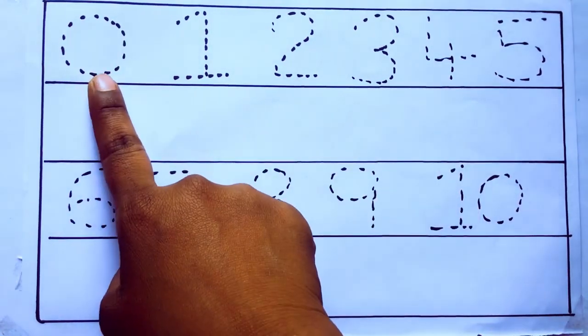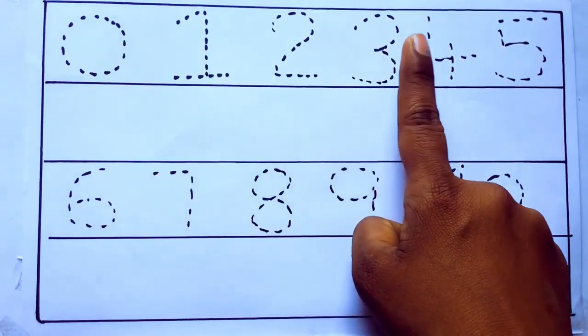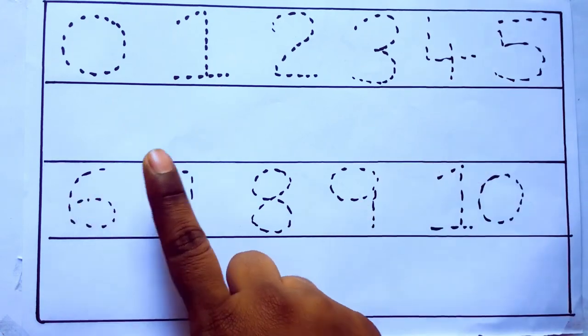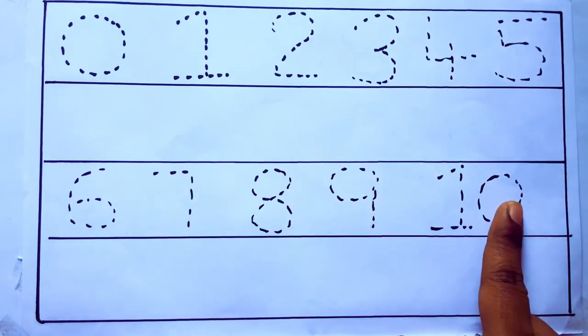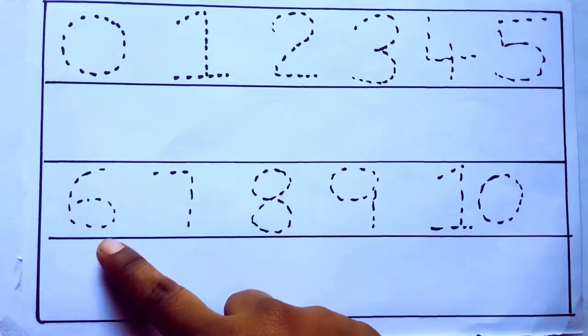Today we are going to learn numbers 0 to 10: 0, 1, 2, 3, 4, 5, 6, 7, 8, 9, 10, and rewriting the numbers.